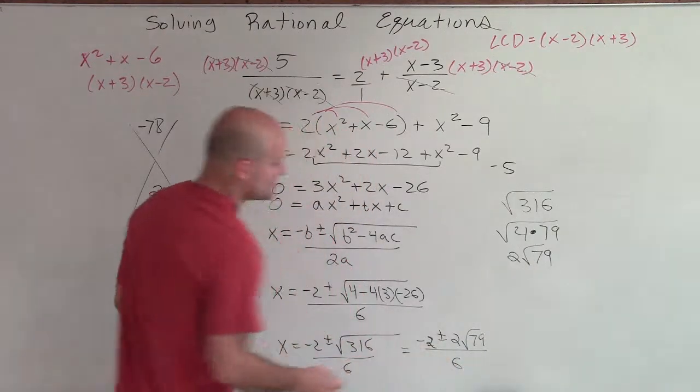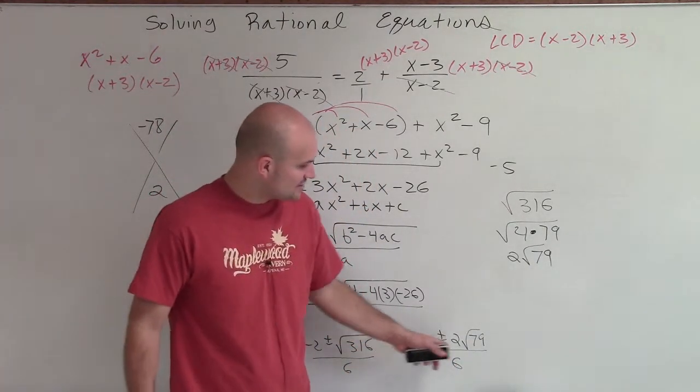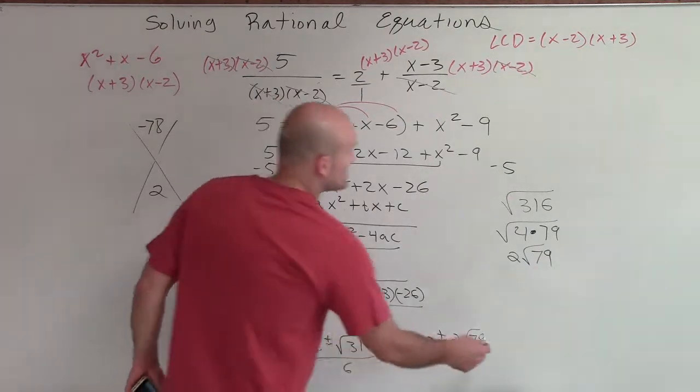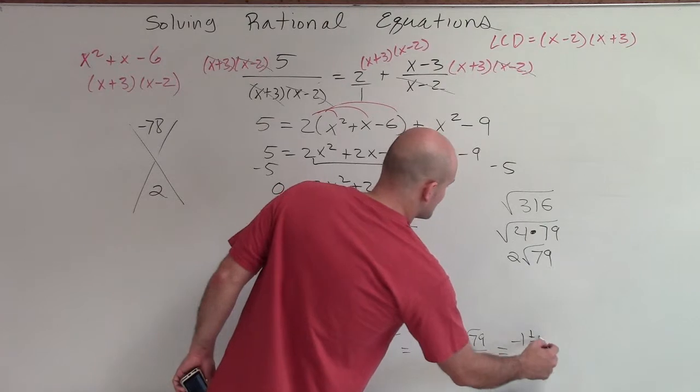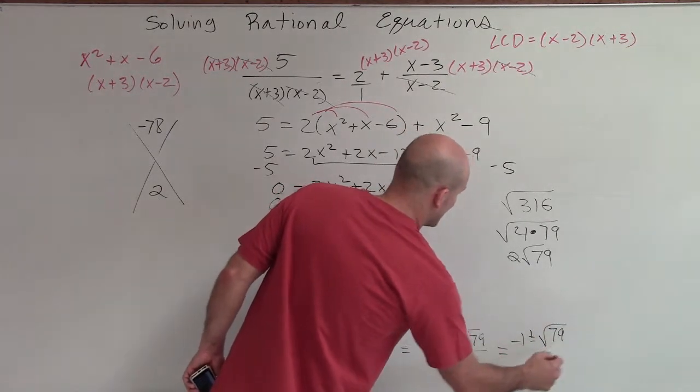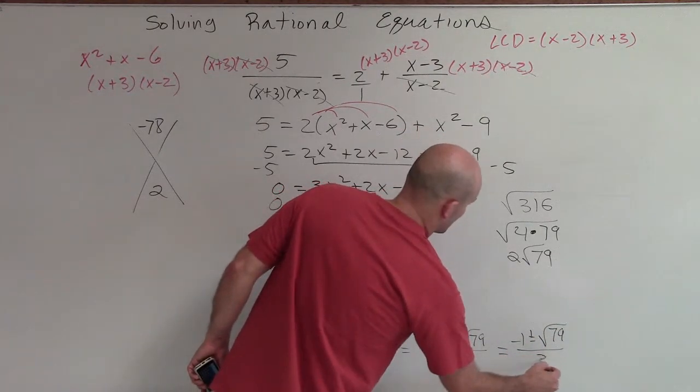And now what we can see is I can eliminate this 2. I can divide everything by 2 to obtain my final answer, which is going to be a negative 1 plus or minus the square root of 79 divided by 3.